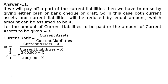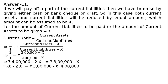This implies that 2 upon 1 equals rupees 3 lakh minus x upon 2 lakh minus x. Cross-multiplying: 4 lakh minus 2x equals 3 lakh minus x. Rearranging sides, the symbol changes: x minus 2x equals 3 lakh minus 4 lakh. This implies that minus x equals minus 1 lakh, so x equals rupees 1 lakh.